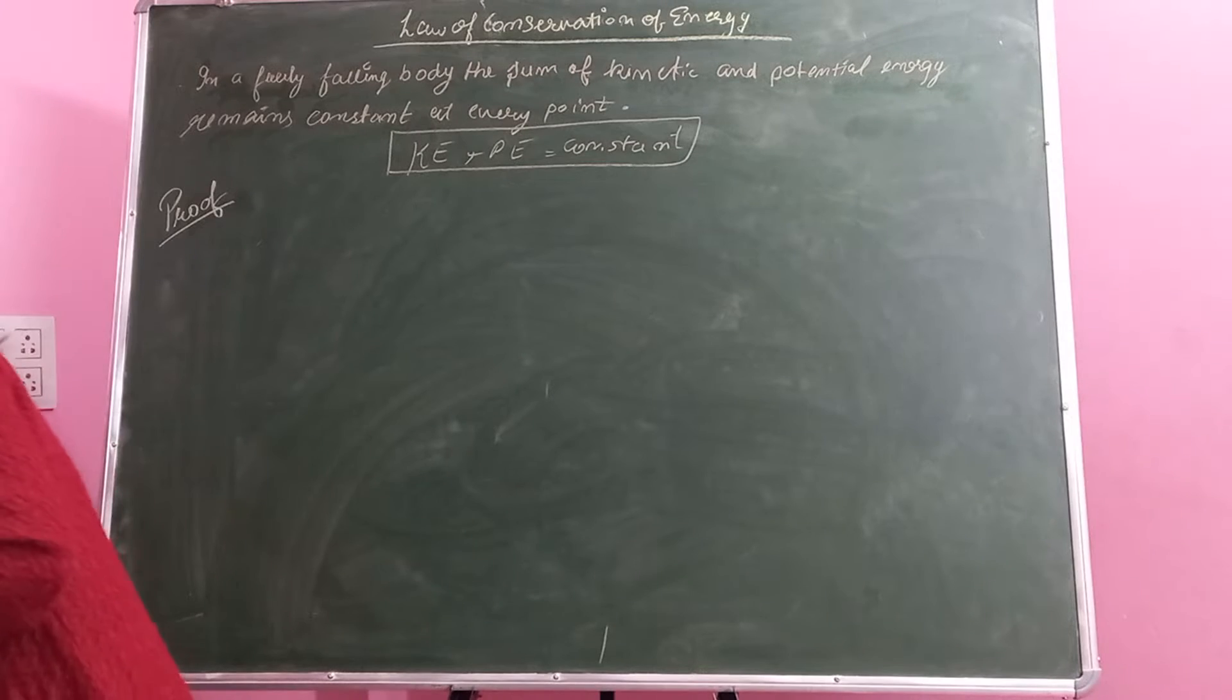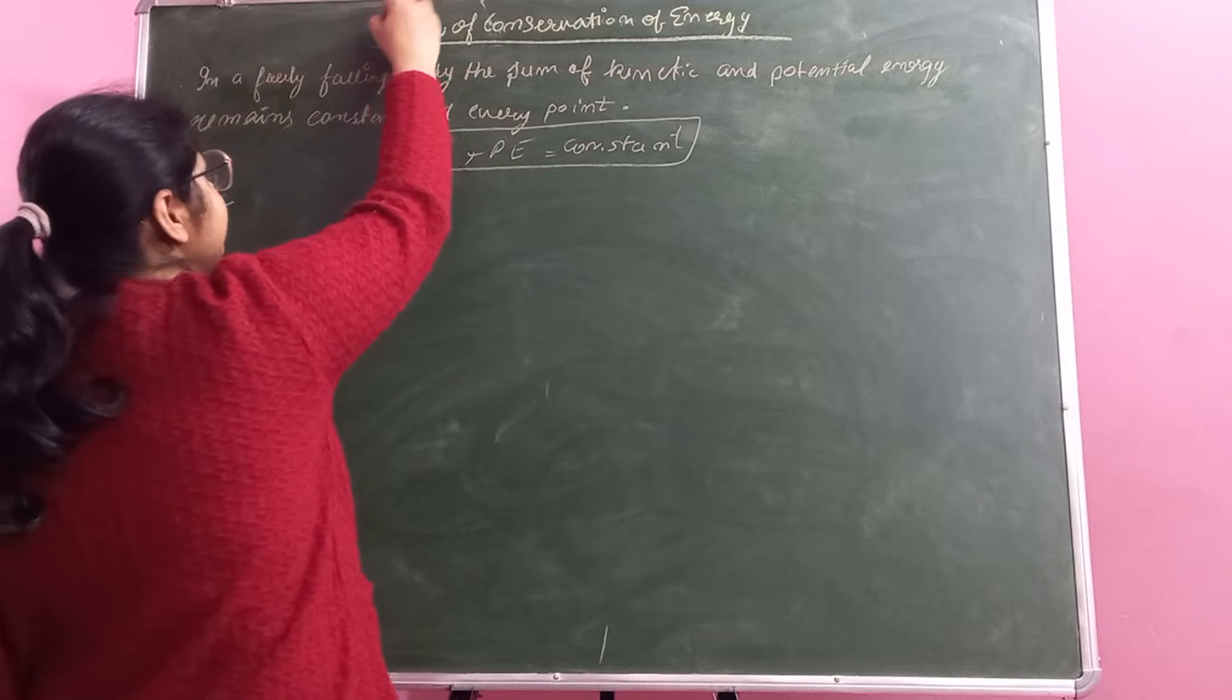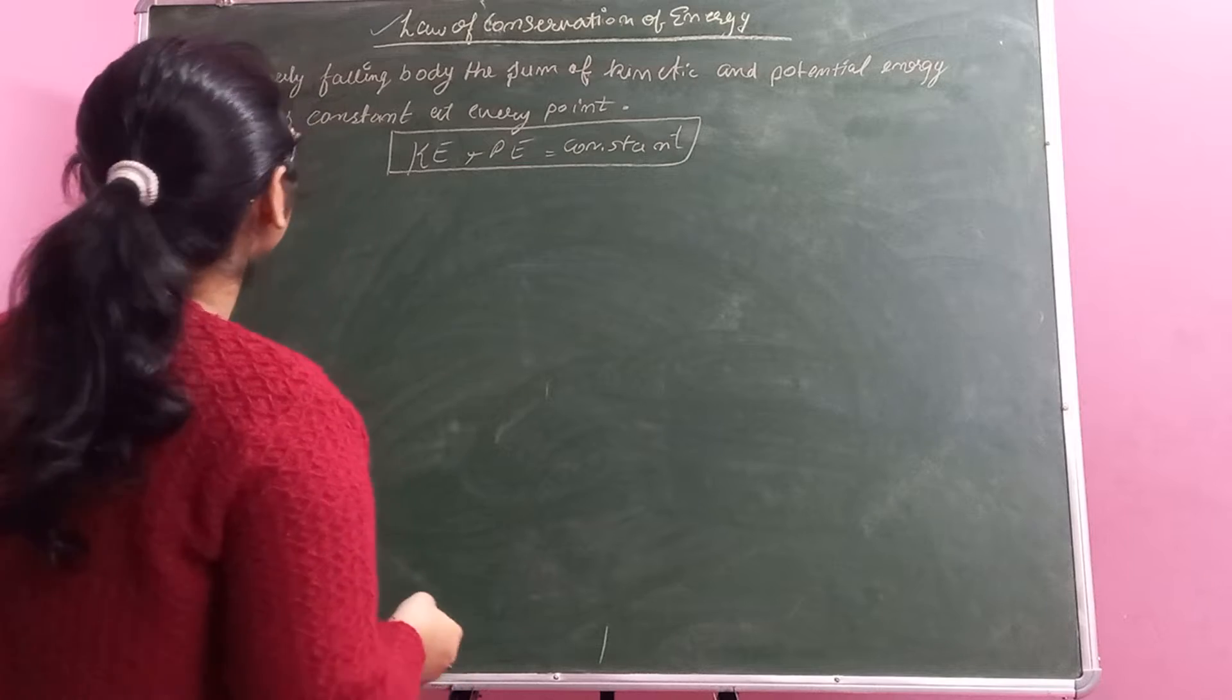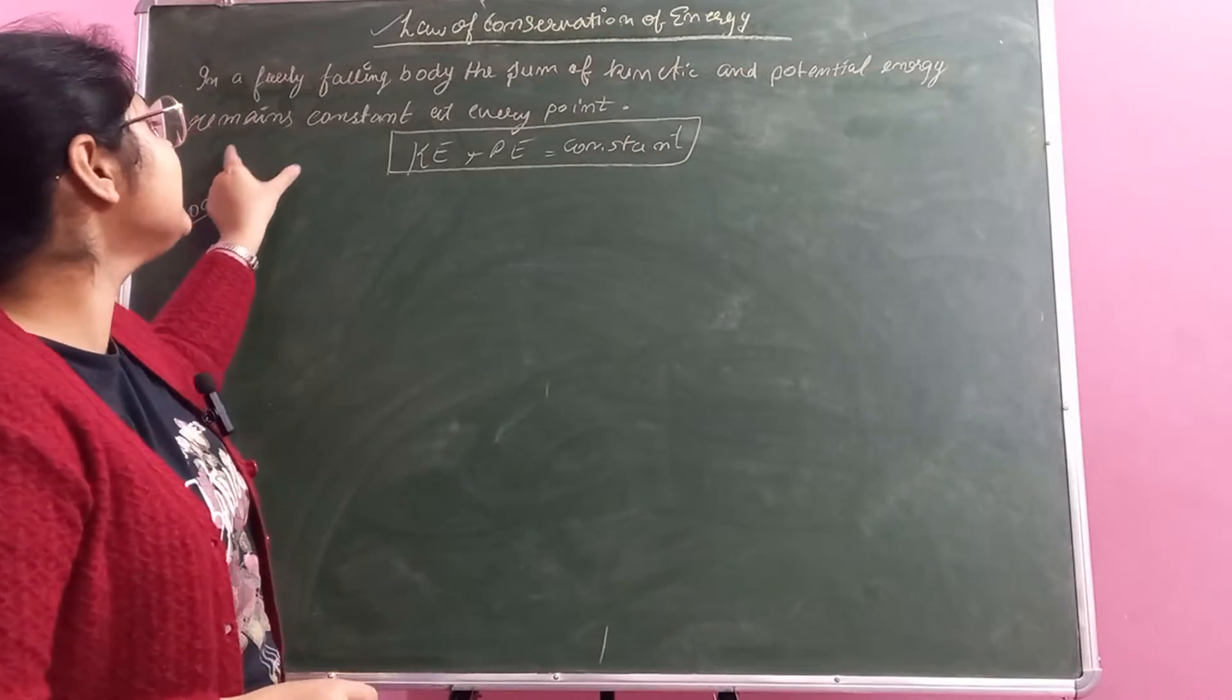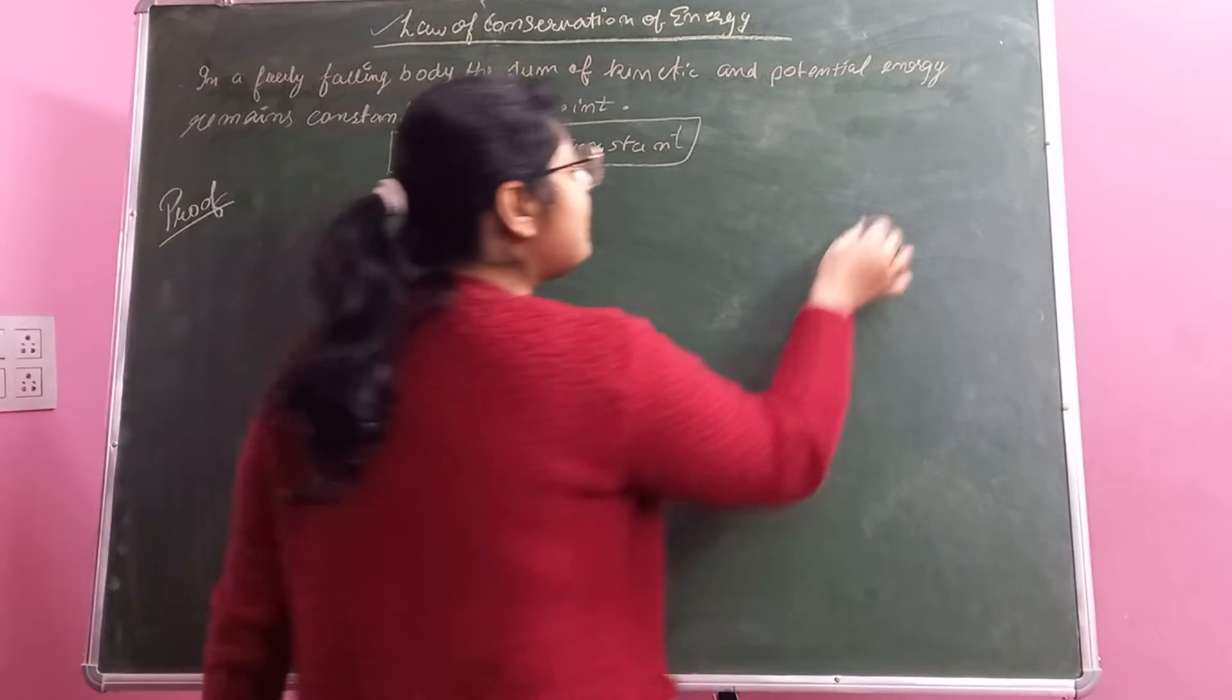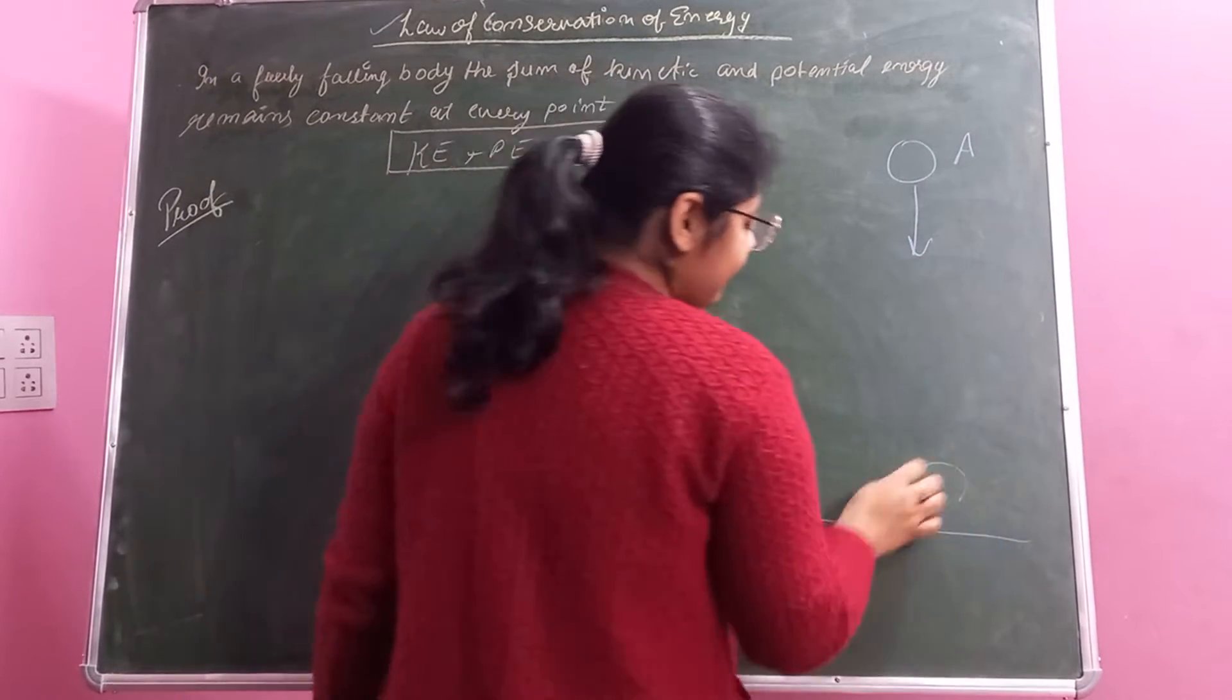So let's start. What is the law of conservation of energy? When we talk about the law of conservation of energy, it says that in a freely falling body, the sum of kinetic and potential energy remains constant at every point. If a body is freely falling from point A, coming down to the ground at point C,